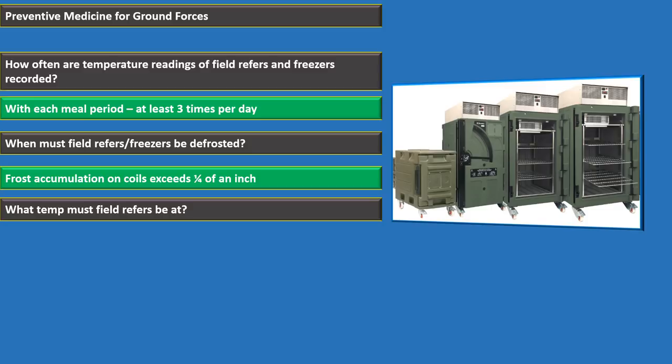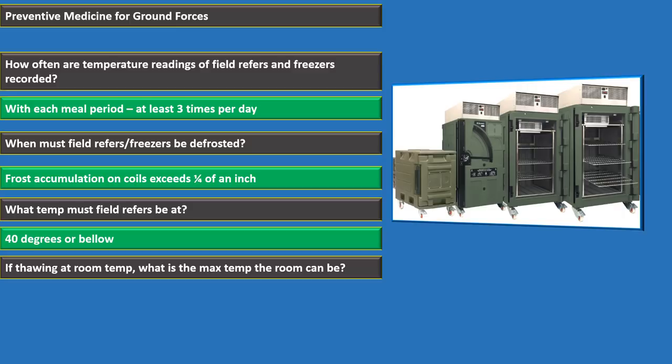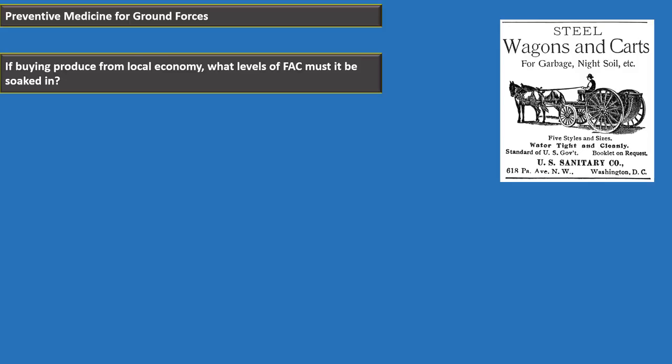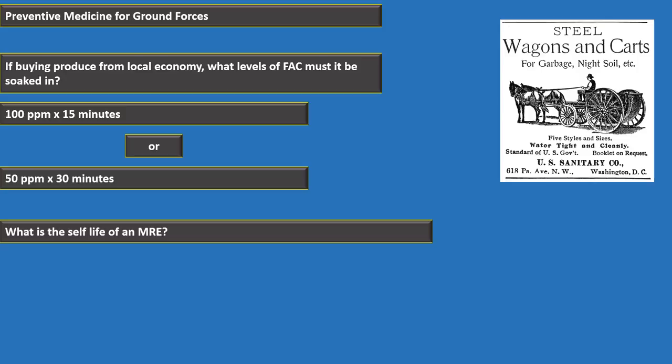When thawing food at room temperature, the maximum room temperature is 80 degrees. If buying produce from the local economy, soak it in 100 parts per million chlorine for 15 minutes, or 50 parts per million for 30 minutes. The shelf life of an MRE is 48 months.